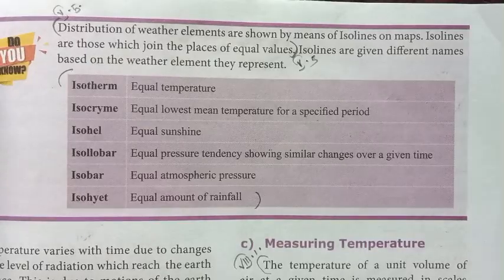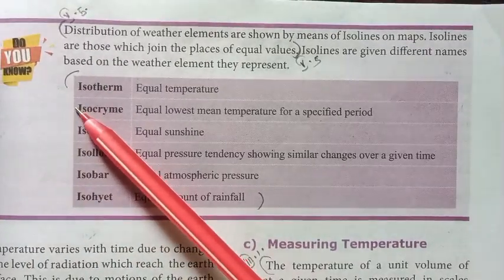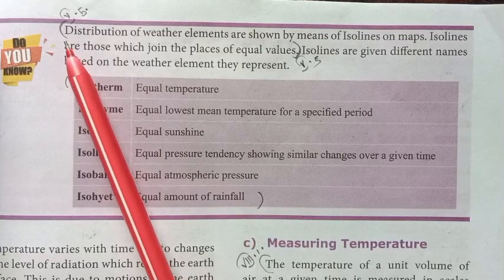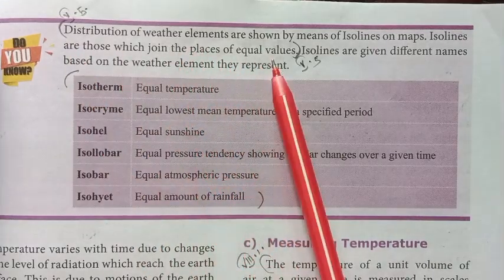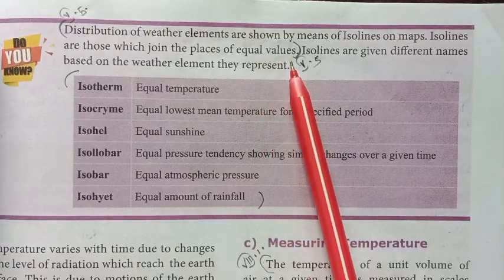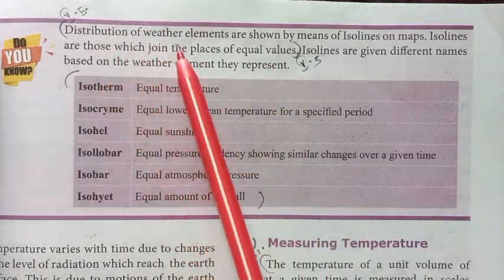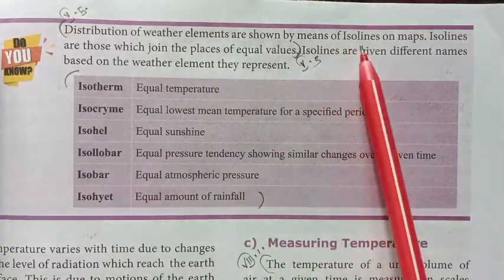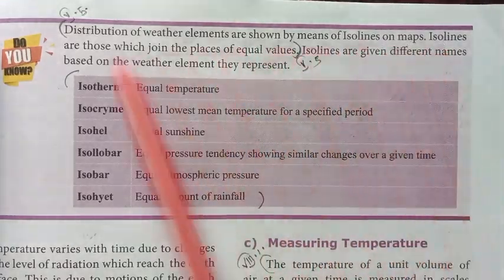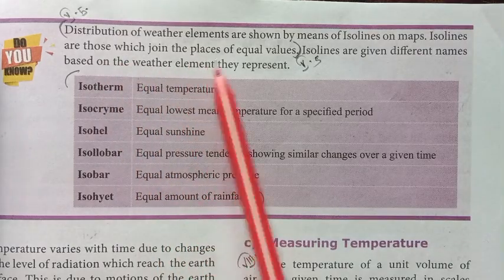Answer from page number 97. Distributions of weather elements are shown by means of ISO lines on maps. ISO lines are those which join the places of equal values, marking distributions of weather elements.